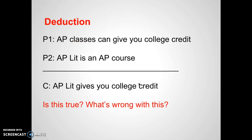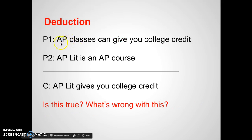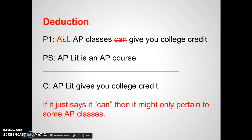Let's take a look at this syllogism. Premise one: AP classes can give you college credit. Premise two: AP Lit is an AP course. Conclusion: AP Lit gives you college credit. Is this true? What's wrong with this? Well, it's not true because it said AP classes 'can' give you college credit — that doesn't necessarily mean that all AP classes give you college credit. Here's how we fix it: 'All AP classes give you college credit. AP Lit is an AP course. Therefore, AP Lit gives you college credit.'